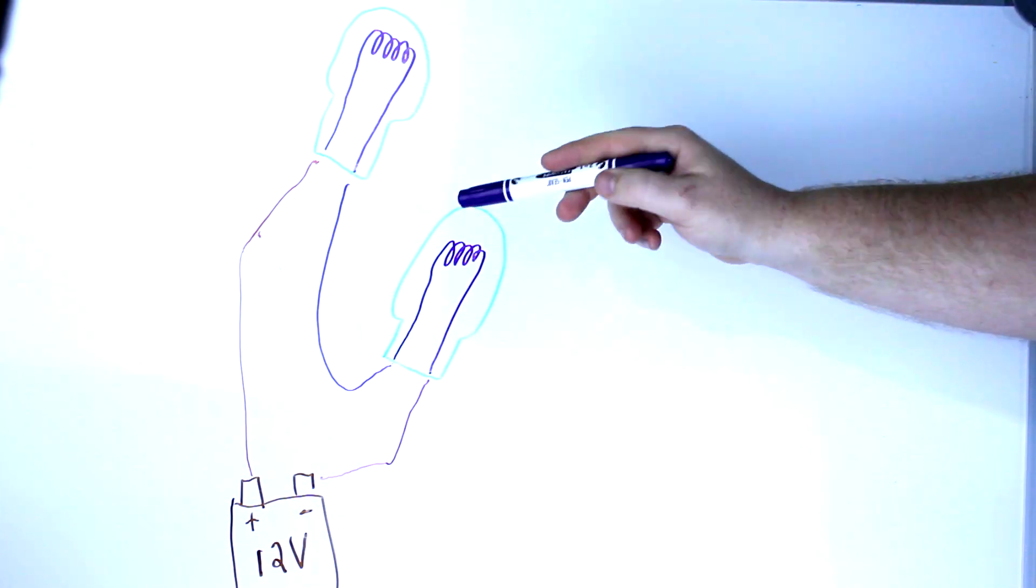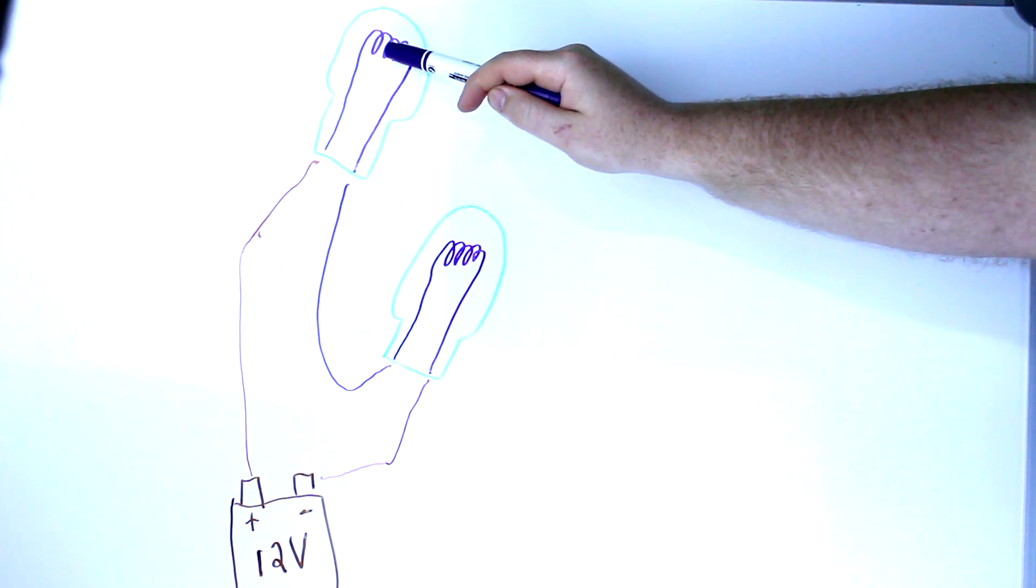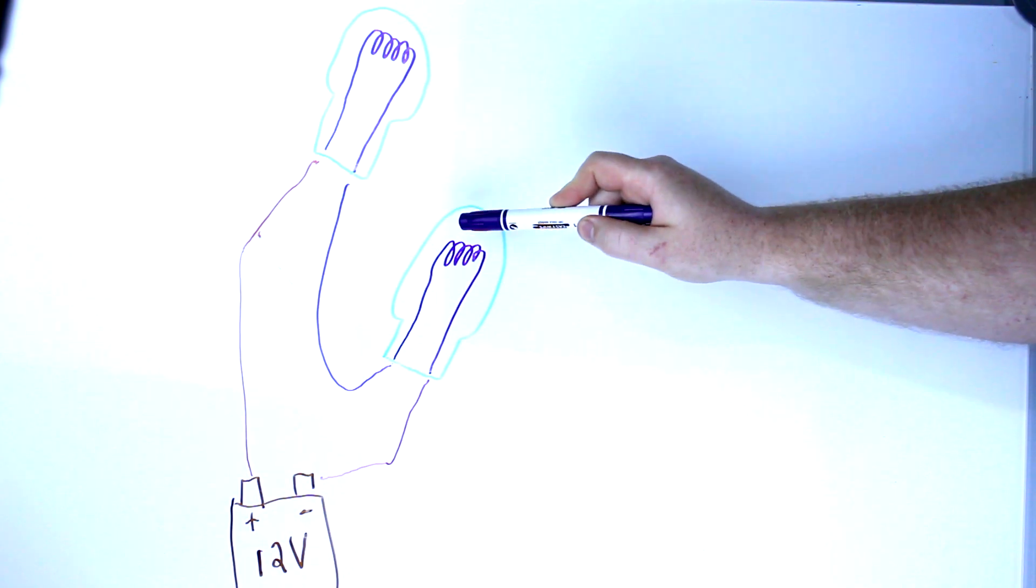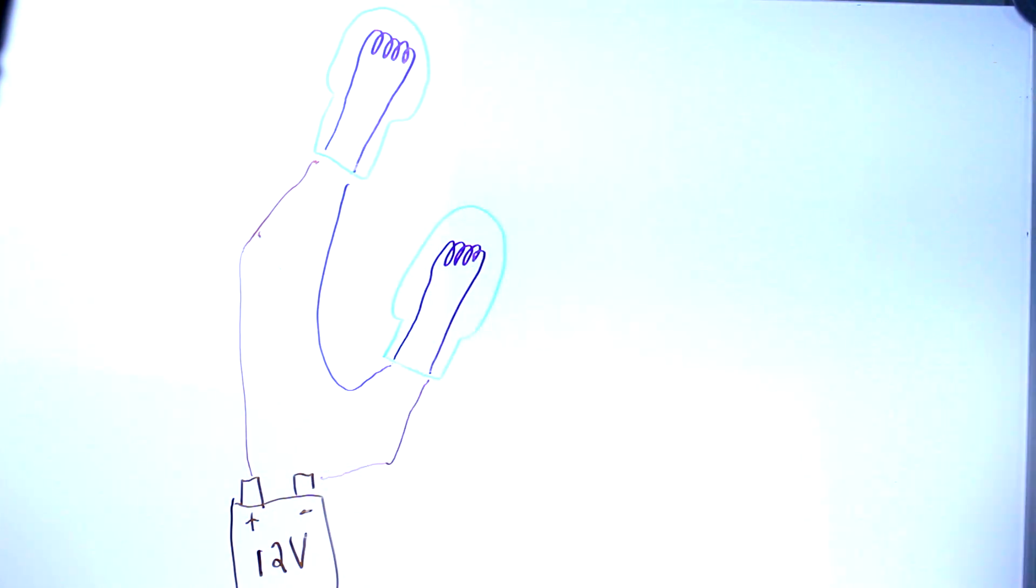Then you have 12 volts coming through here. You'll use up six of those volts, head to the second bulb, and use up the last six of your volts, and head back to the battery.